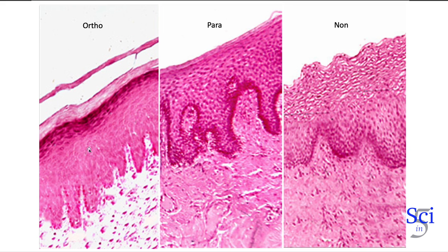Below this layer is the stratum spinosum — the prickly layer, as it's called — and it's common in all three types. The difference is that in the ortho it seems fairly dense, while in the para and non-keratinized there appear to be more structures and activity going on.